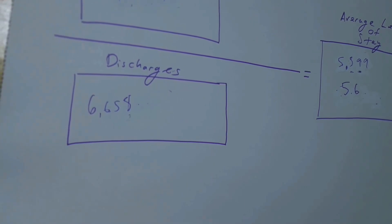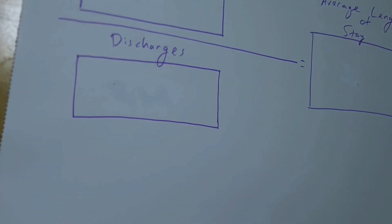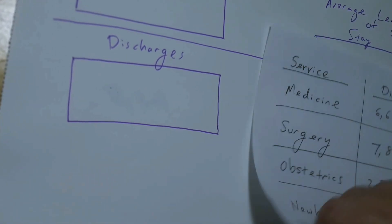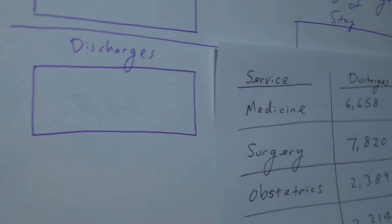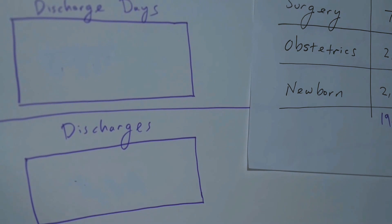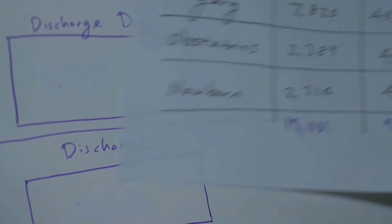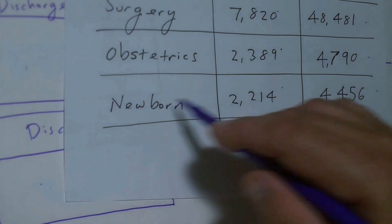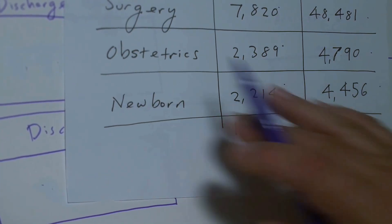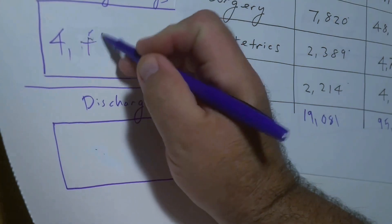Let's do it now for newborns. For the newborn service, same formula, same boxes, and I'm going to use newborn data. The discharge days for newborn is 4,456. So the newborn discharge days is 4,456.